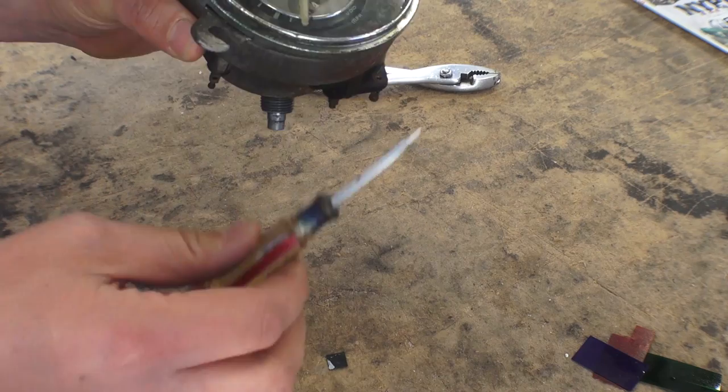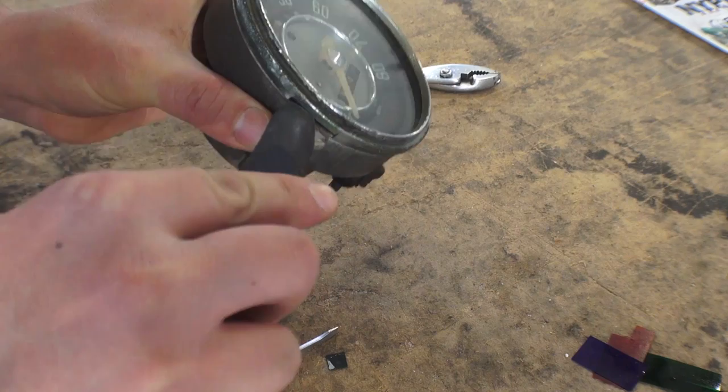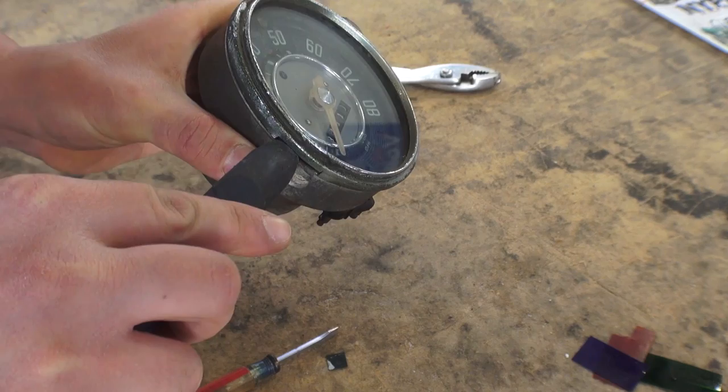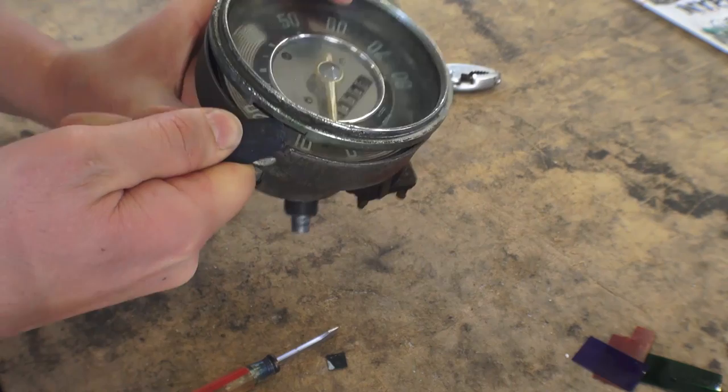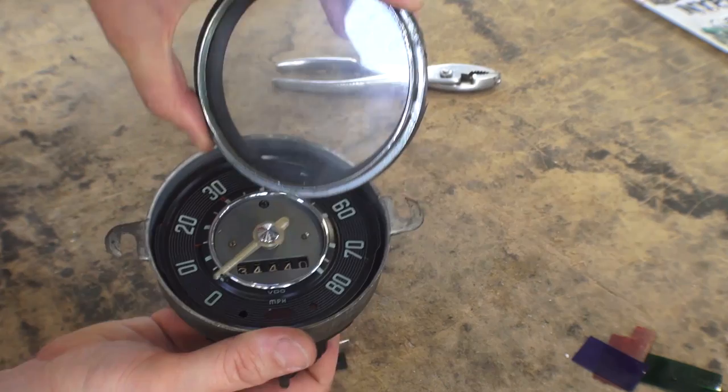So we want to take the glass off. I usually get a small screwdriver and try to get under here where it starts to split and just pry up. I had this off recently so it's going to come off pretty easily. Start working your way around. There it goes, it just popped right off.